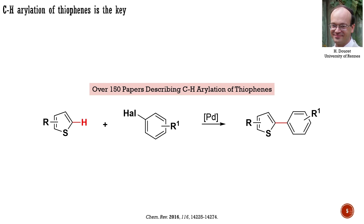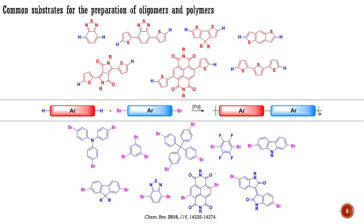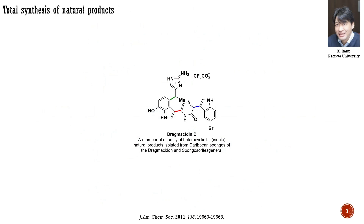The Doucette group has published over 150 papers describing highly efficient palladium-catalyzed CH arylations involving thiophines, perhaps the most extensively studied systems among ORNs. Consequently, oligomers and polymers demonstrating promising properties are currently prepared by palladium-catalyzed CH arylation of thiophine derivatives, as described in this general scheme. The list of the most frequently used thiophine derivatives is shown in red, while the most important aryl halides are indicated in blue.